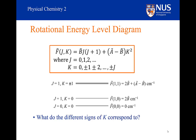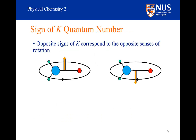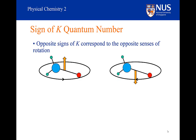The signs of the K quantum number arise because the molecule could be rotating clockwise or anticlockwise. If the rotational axis is perpendicular to the principal axis, both pictures describe the same rotation viewed from a different angle. However, when the rotational axis is not perpendicular to the principal axis, rotating clockwise and anticlockwise is different — and this is differentiated by the different signs of the K quantum number.